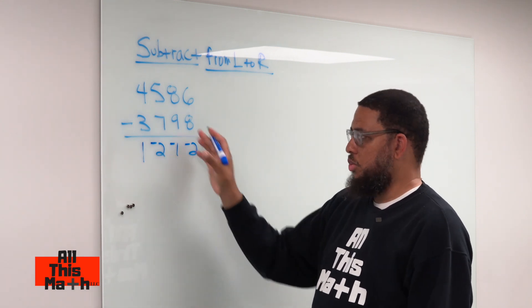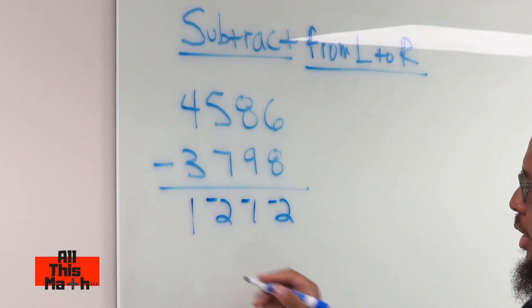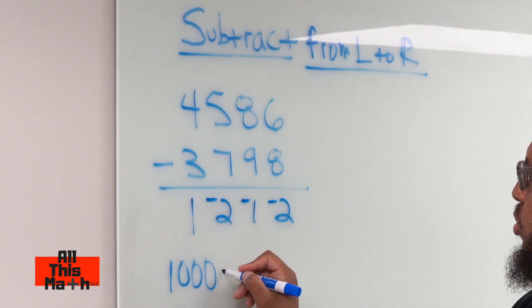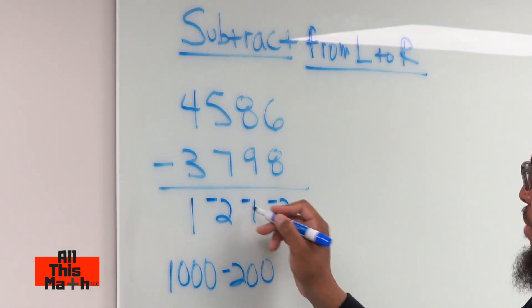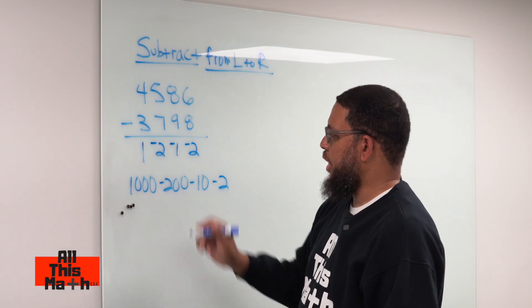Now, what do we do with these numbers? These numbers are going to enable us to get to the answer. So what this really means is 1,000 minus 200 minus 10 minus 2. And that's going to give us our answer.